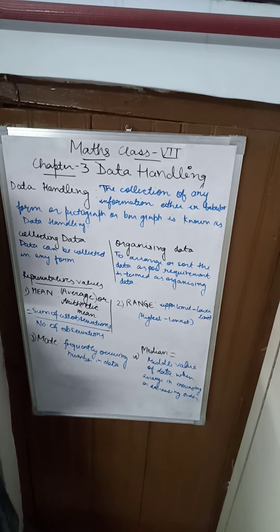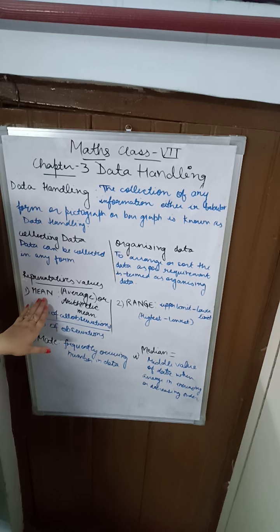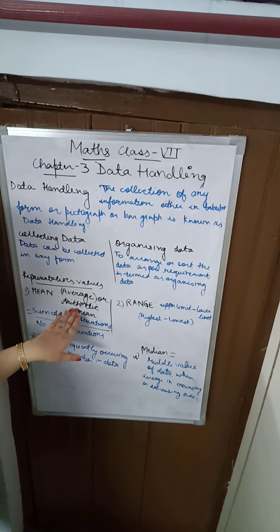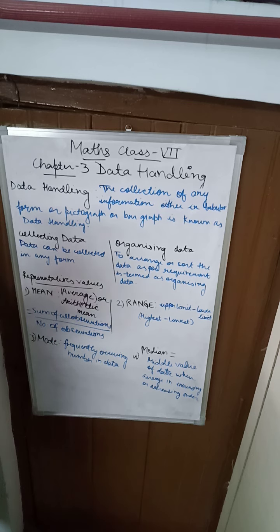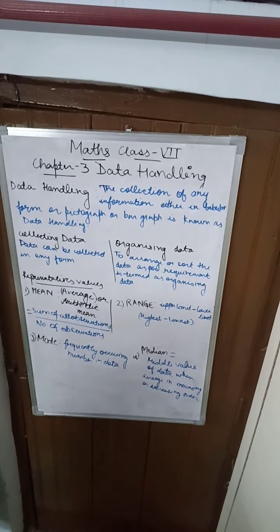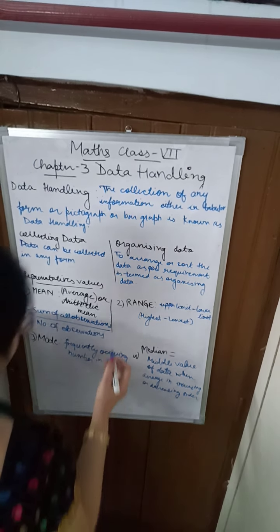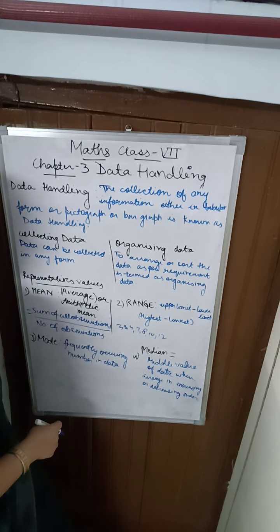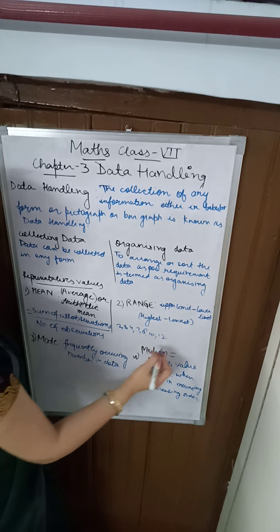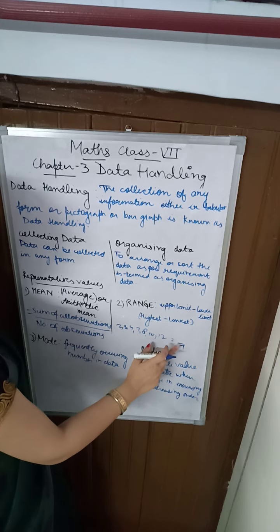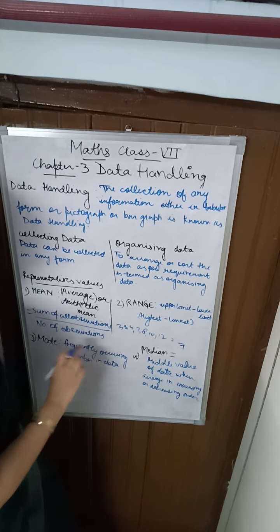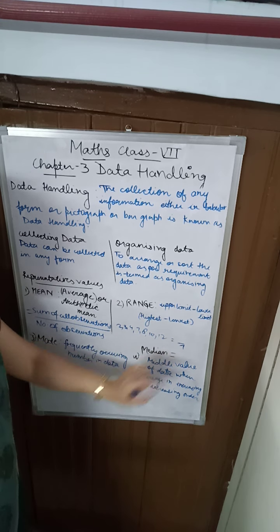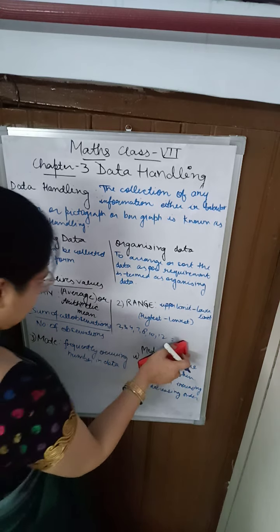Next is the representative value. The first term you will use in this chapter is mean, which in simple language is called average or arithmetic mean. The formula to find the mean or average is: sum of all observations divided by number of observations. For example, if you have the data 2, 3, 4, 7, 8, 10, 12 — there are 7 numbers, so you add all of them and divide by 7 to get the mean or average.